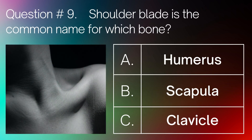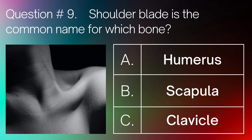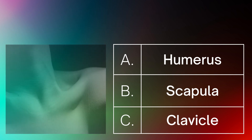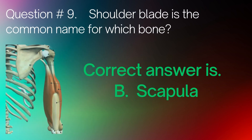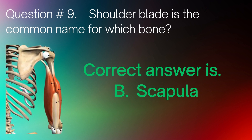Question number 9. Shoulder blade is the common name for which bone? A. Humerus. B. Scapula. C. Clavicle. Correct answer is B. Scapula.